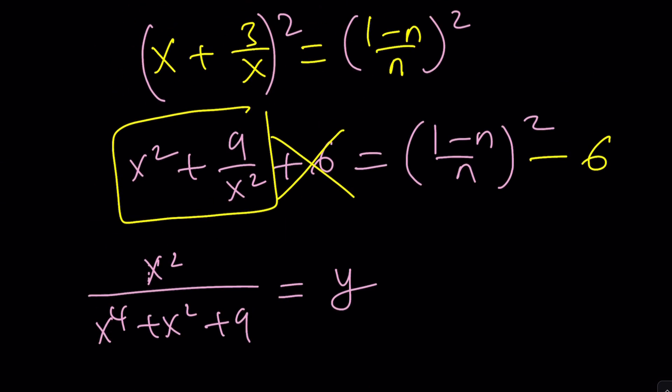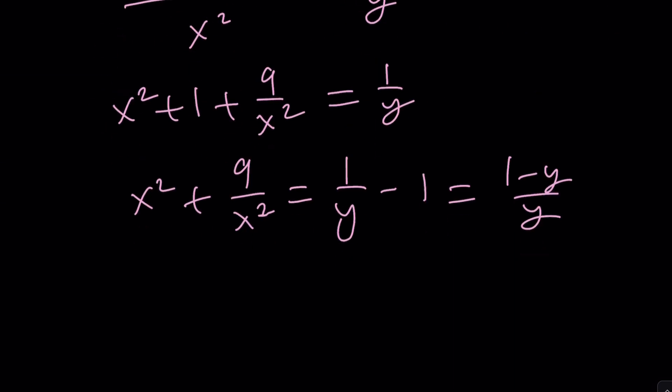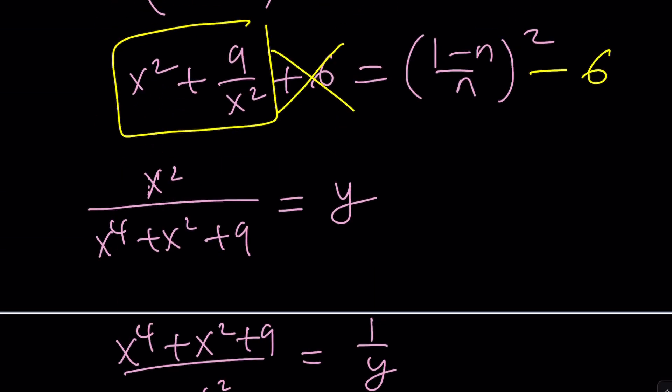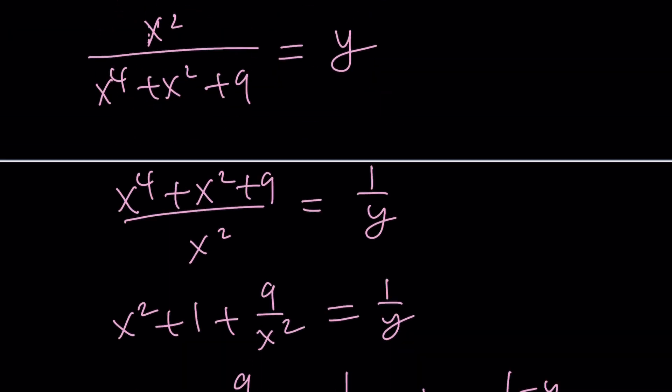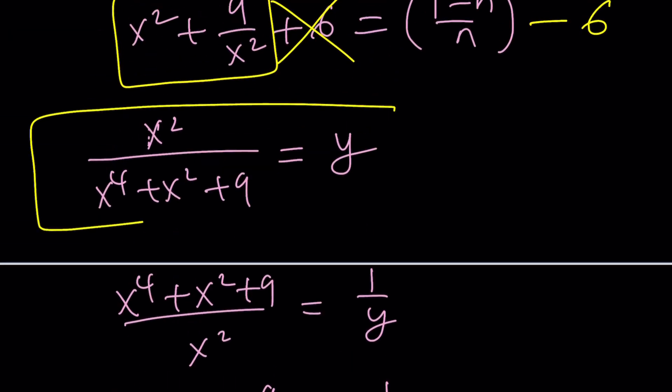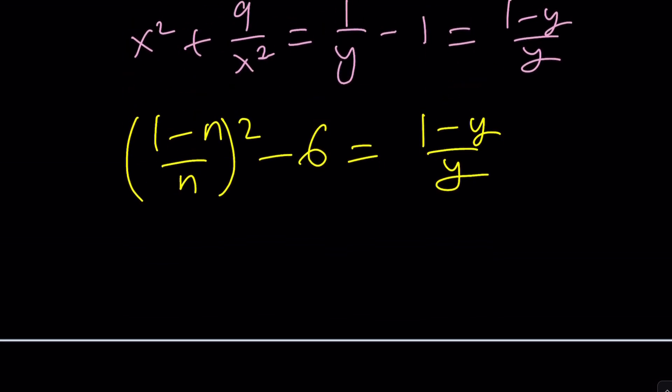Which is 1 minus n over n squared minus 6. That's equal to 1 minus y over y and remember our goal is to solve for y. This is what we're trying to find. Cool let's do it. How do we do it?